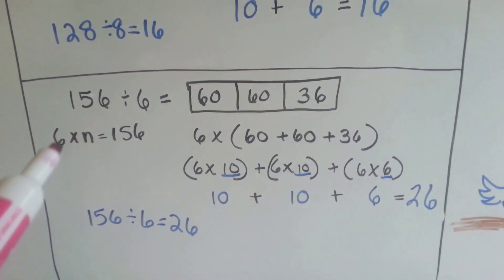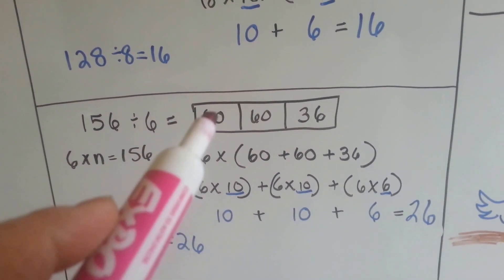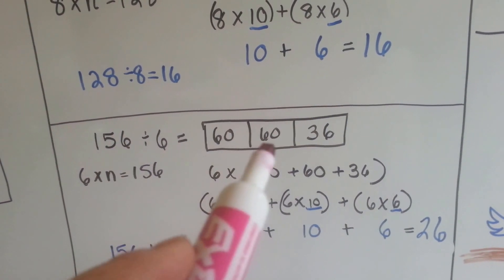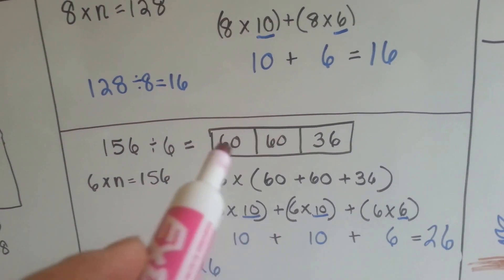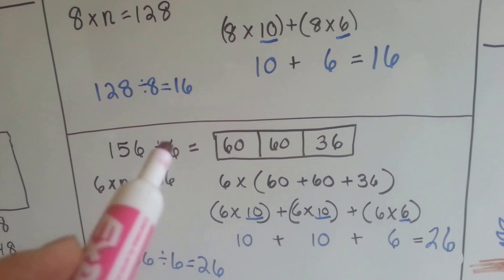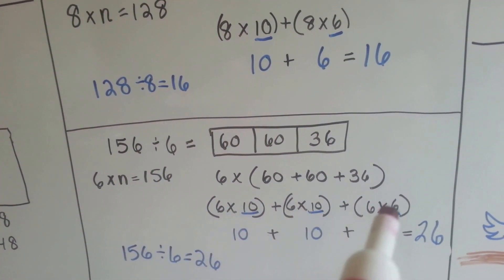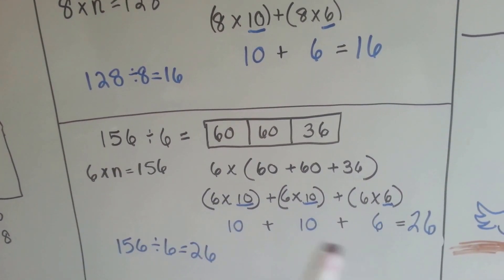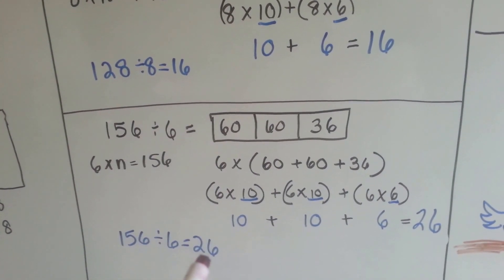Let's see what happens when we have a bigger number. 156 divided by 6. Let's do 6 times 10 — that's 60. I'm still pretty far off from 156. Let's do another 60. Now I'm at 120, because 60 and 60 is 120. I'm still 36 away from 156. 6 times 6 is 36. So now I know I have 6 times 10, 6 times 10, and 6 times 6. I pull the 10, the 10, and the 6, add them together and get 26. And I know that 156 divided by 6 is 26.